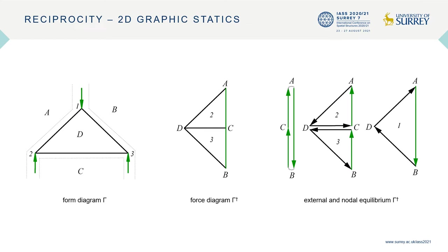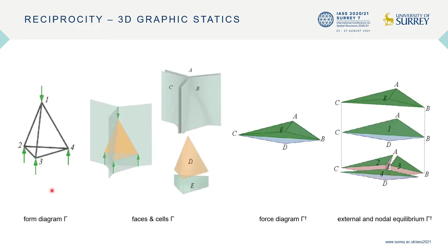Now let's move on to reciprocity in 3D. The subspace assignment in 3D is defined using cells a to e, as opposed to faces in 2D. Cells a to e have reciprocal vertices a to e in the force diagram. Closed cells or polyhedrons 1 to 4 in the force diagram are reciprocal to vertices 1 to 4 in the form and represent their nodal equilibriums. The next reciprocity is between the edges and faces of the dual diagrams — for example, edge 1-2 is parallel to the normal of its reciprocal face Cbd in the force. The magnitude of the force in this member is proportional to the area of face Cbd in the force diagram.